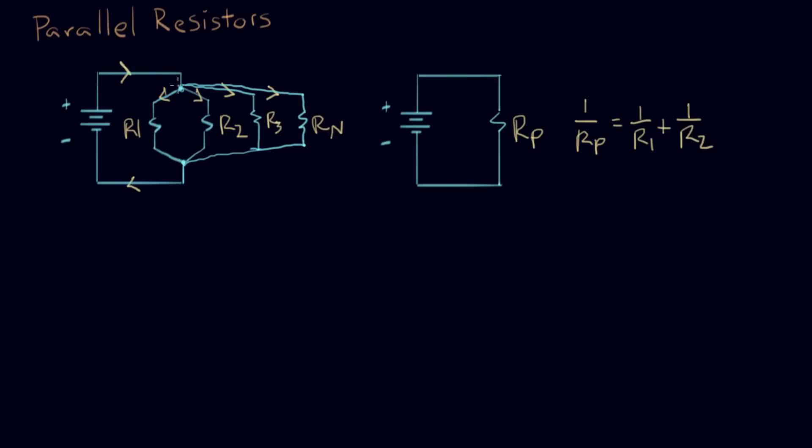So the current basically is coming down here and splitting amongst all the resistors. Now all the resistors share the same voltage, so that's just V. They all share the same V, and they all have a different current, assuming they all have a different resistance value.